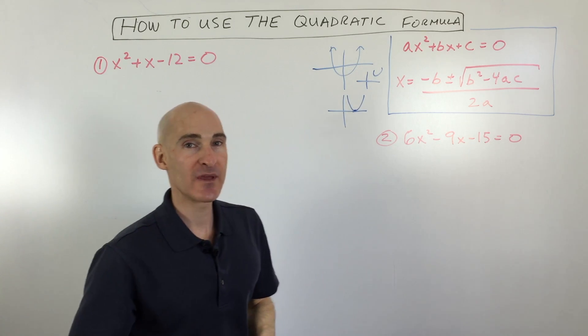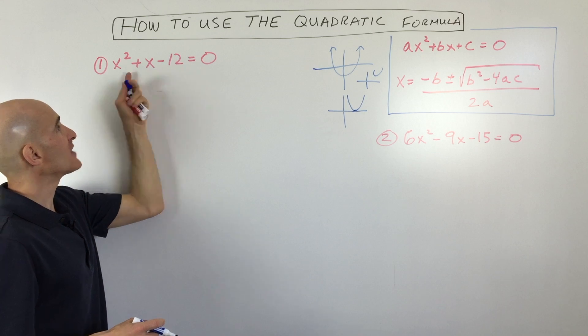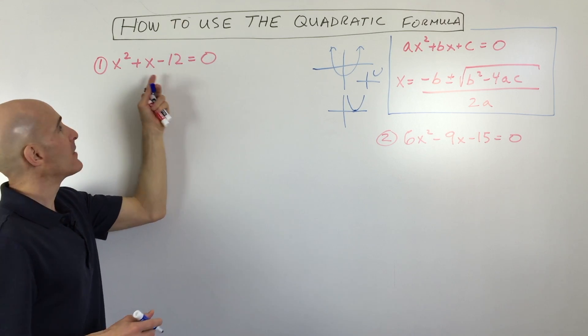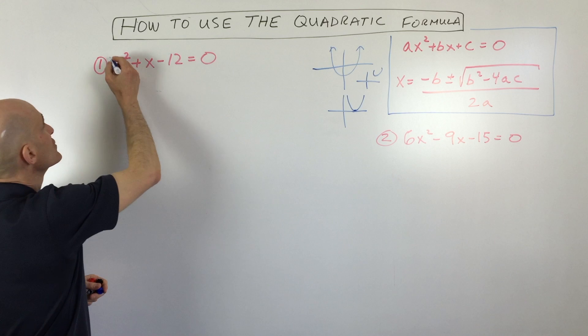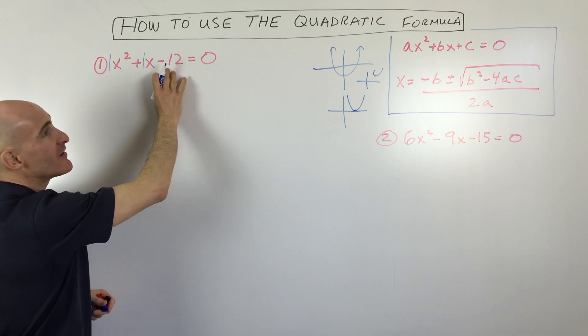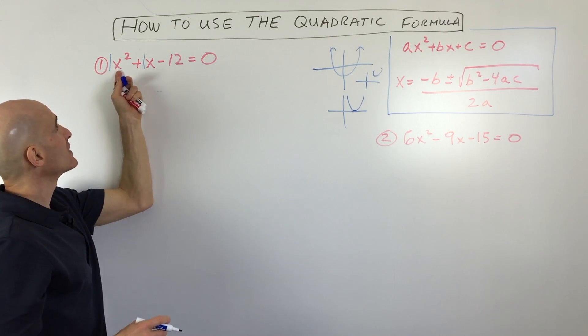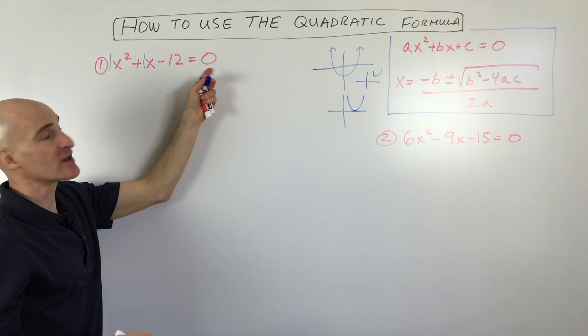So let me show you what I mean. Let's get into some examples. So this first one here, you can actually factor this one, but let's just go ahead and take a look at it. So you can see the a value is 1, the b value is 1, and the c value is negative 12. So you want to write it in descending order like that so you can identify the a, b, and c, and you want to set it equal to zero.